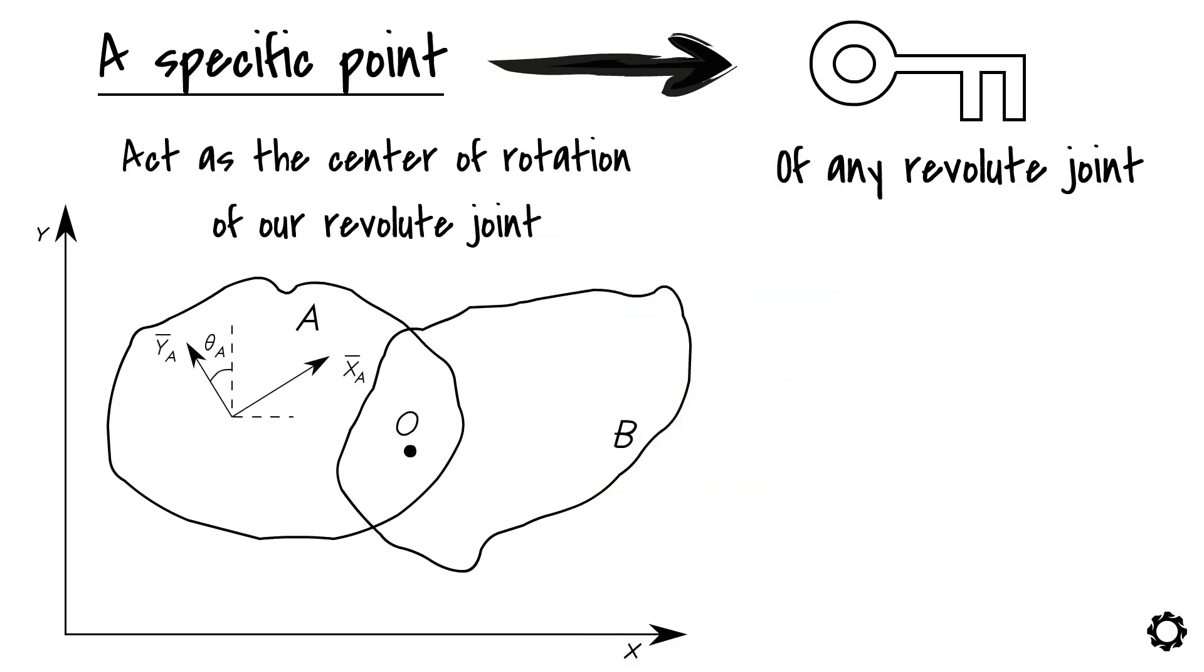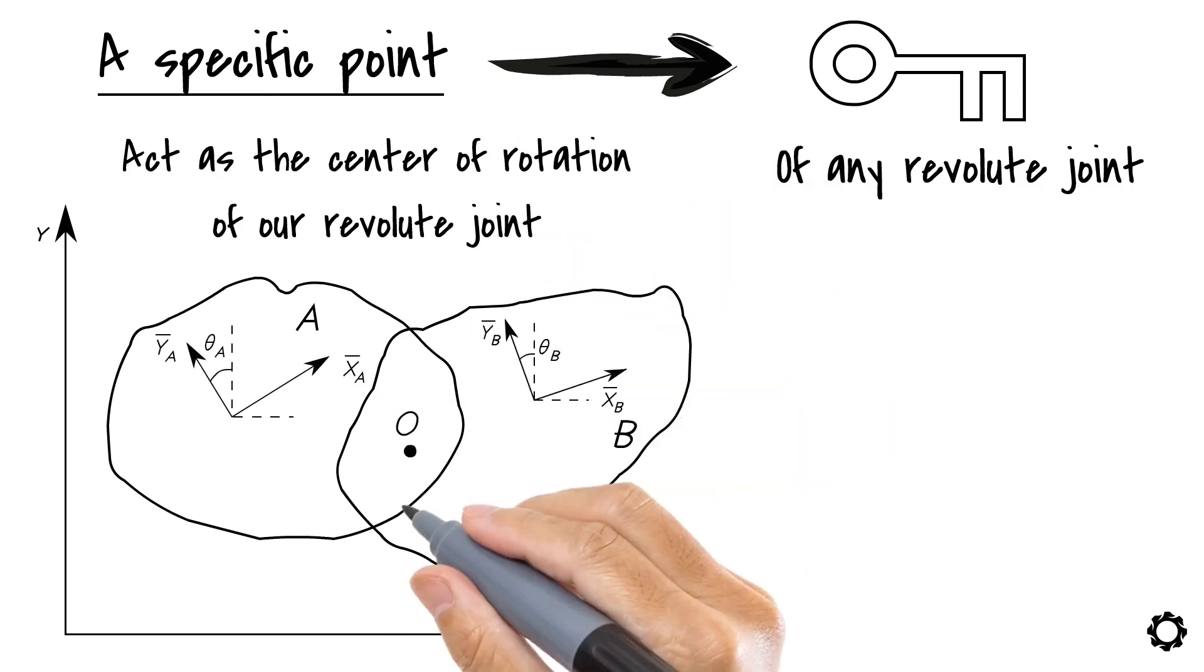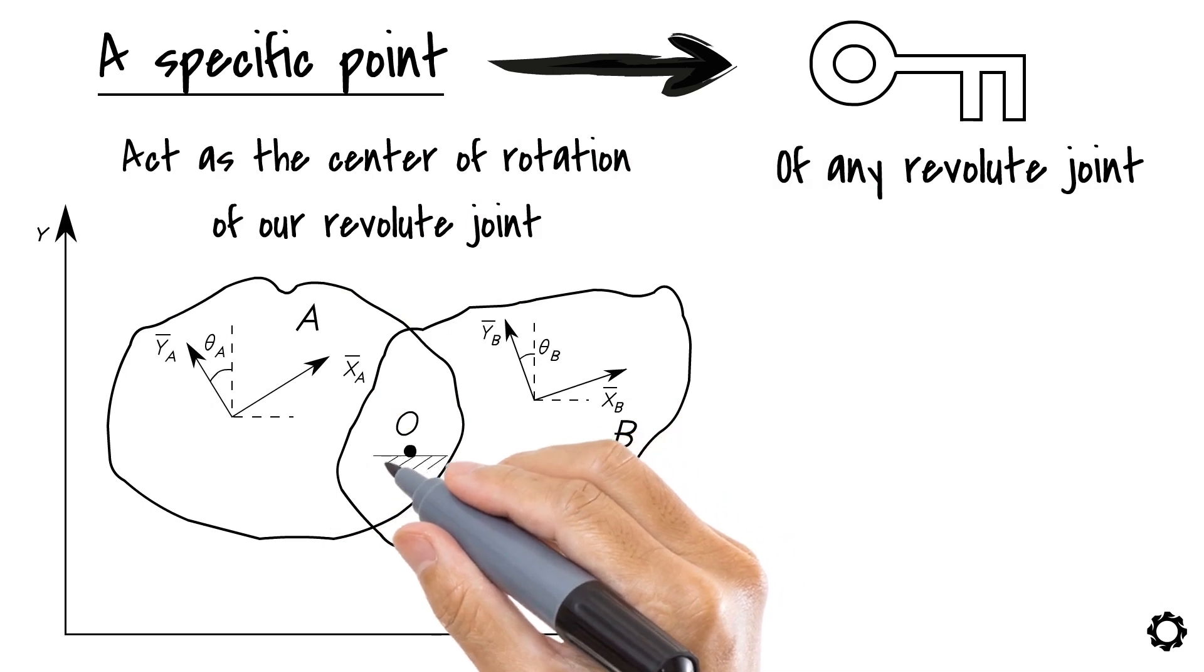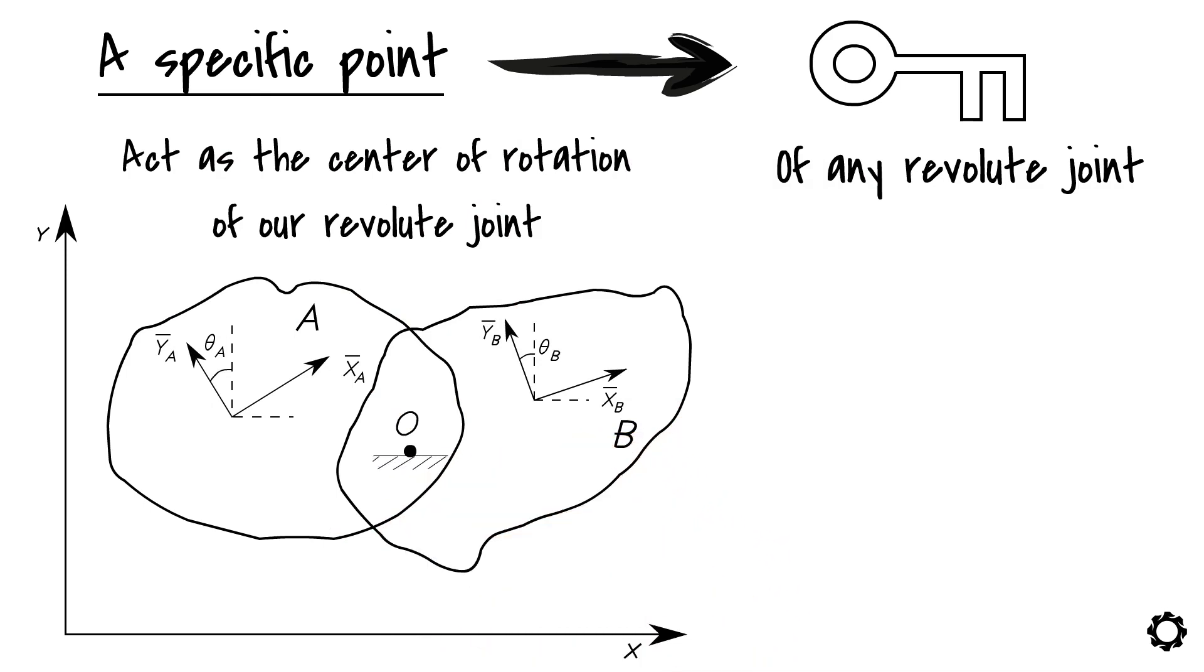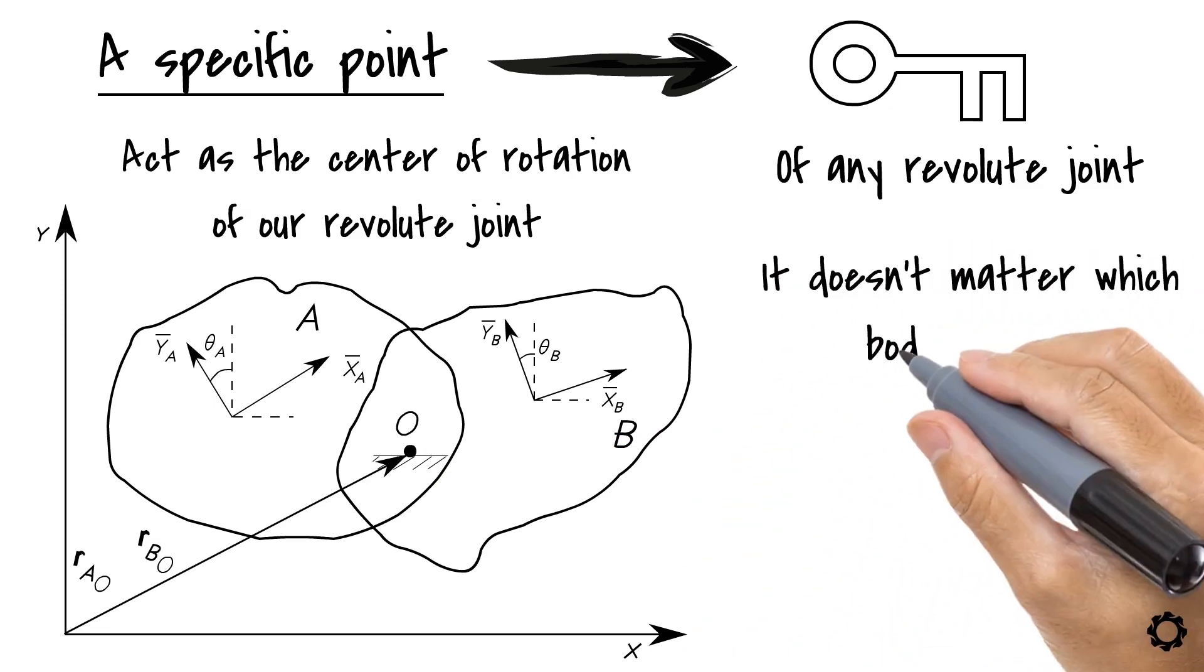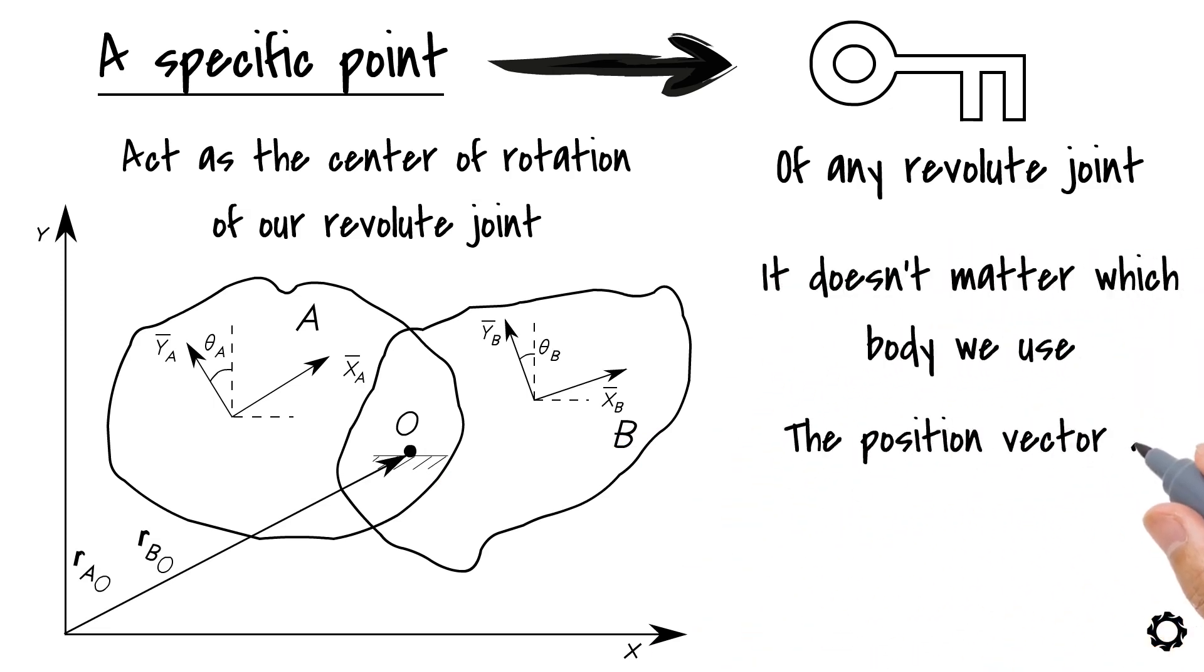Let's fix local reference systems on each of the bodies. This point is considered in a position fixed relative to both bodies. We can find the position vector of this point O using any of the two bodies A or B. It doesn't matter which body we use, the position vector will always be the same.